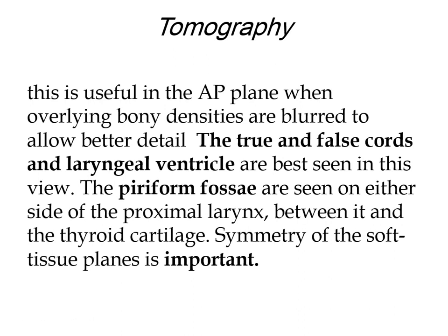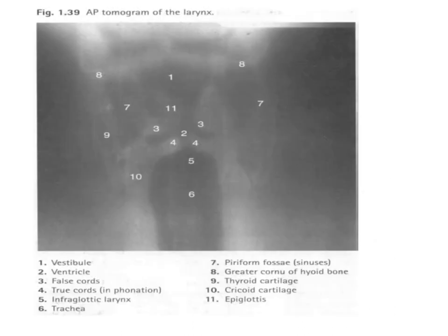Another imaging study is tomography, which is useful for the AP plane when overlying bone densities are blurred. It allows better detail so that the true and false cords and the laryngeal ventricle can be best evaluated. However, tomography is now an old technique, almost extinct; no one uses it anymore as CT is much easier.